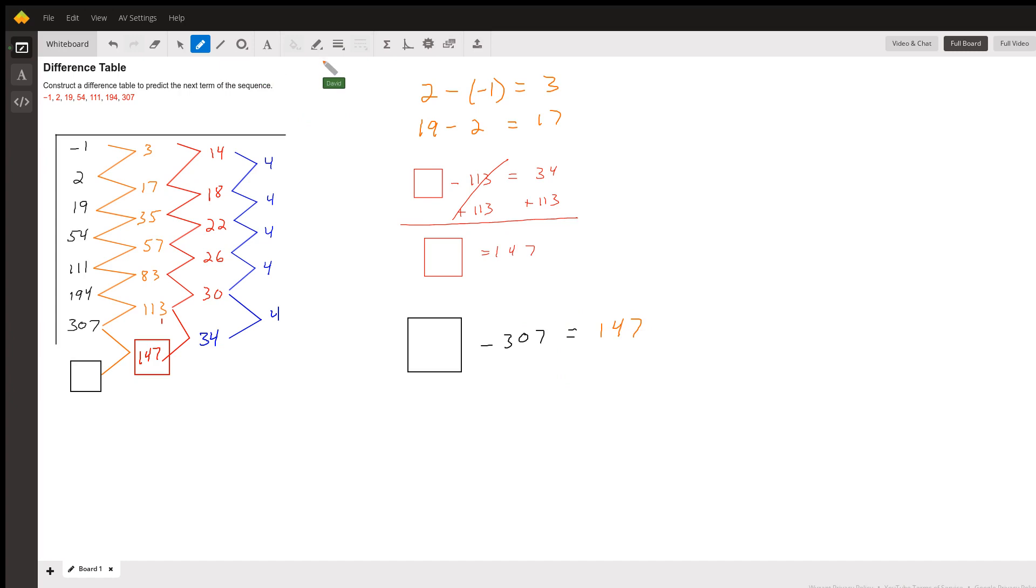So all we have to do to find the value of the black box now is to add 307. And then we can get the value for our black box, which is the missing value. And that's going to be straightforward. We're just going to add 147 plus 307 to get us 454. And that is the missing value.